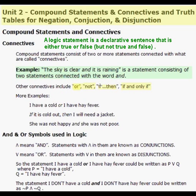Here are some examples. The sky is clear AND it is raining is a compound statement connected with AND. I have a cold OR I have hay fever. If it is cold out, then I will need a jacket. She was not happy and she was not poor. Here we have both the words NOT and also AND included connecting these two statements together.